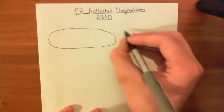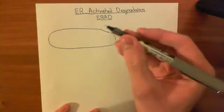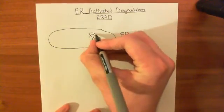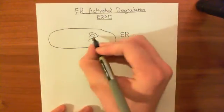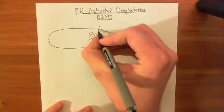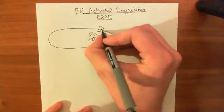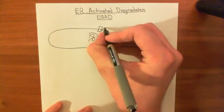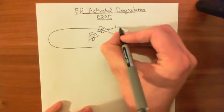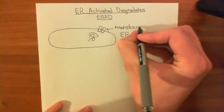Let's say this is the endoplasmic reticulum here. If we have some misfolded protein in our endoplasmic reticulum lumen, what's going to happen is that protein is going to be transported back out of the ER by translocons in the ER membrane. This protein here is known as a translocon, and it sits in the membrane of the ER.